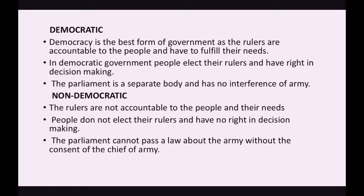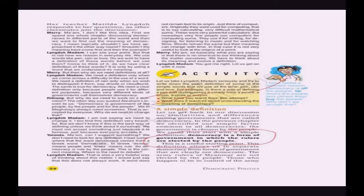Moving to page 24, there's a discussion between students and their teacher about why we are going to the definition of democracy in the second chapter rather than studying the definition first. The teacher says we need a definition only when we are not able to understand something — when we don't have difficulty, we don't need the definition. So here we'll have different situations of democracy first.